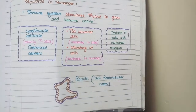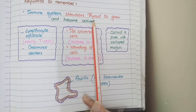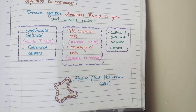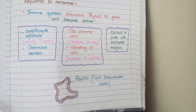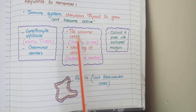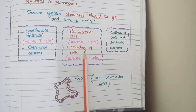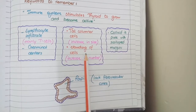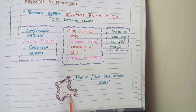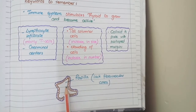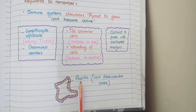The second keyword is 'stimulates thyroid to grow.' The follicular cells increase both in size and quantity. When they increase in size, they change from small cuboidal cells to tall columnar cells. When they increase in number, crowding occurs, distorting the rounded follicle structure into follicles with finger-like projections called papilla.